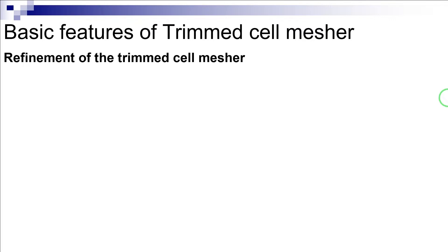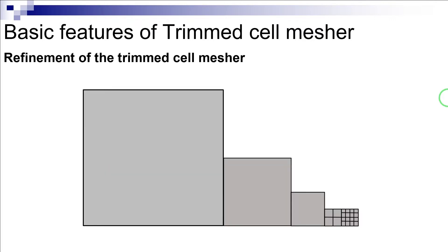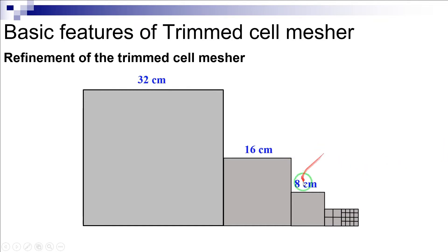Therefore, it allows for increasing or decreasing cell size by a factor of two. For instance, let's assume that we have a mesh with a cell size of 8 centimeters. Coarsening this cell means that we will have a mesh size equal to 16 centimeters, 32 centimeters, etc. Similarly, refining the mesh means that the mesh size will be equal to 4 centimeters, 2 centimeters, etc.